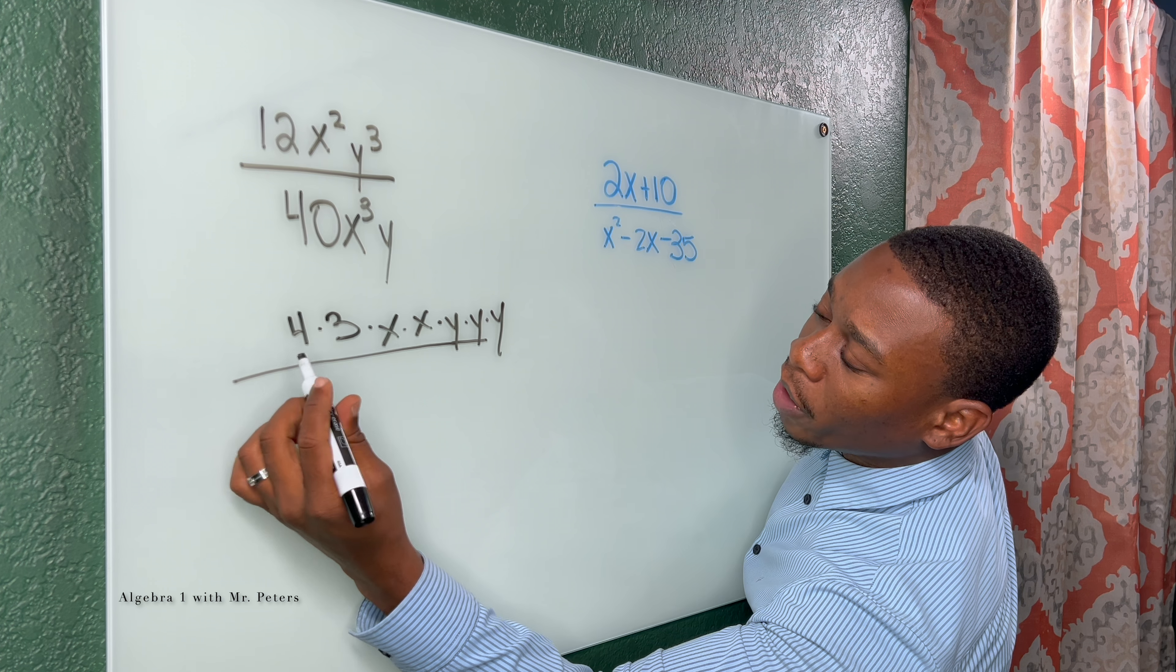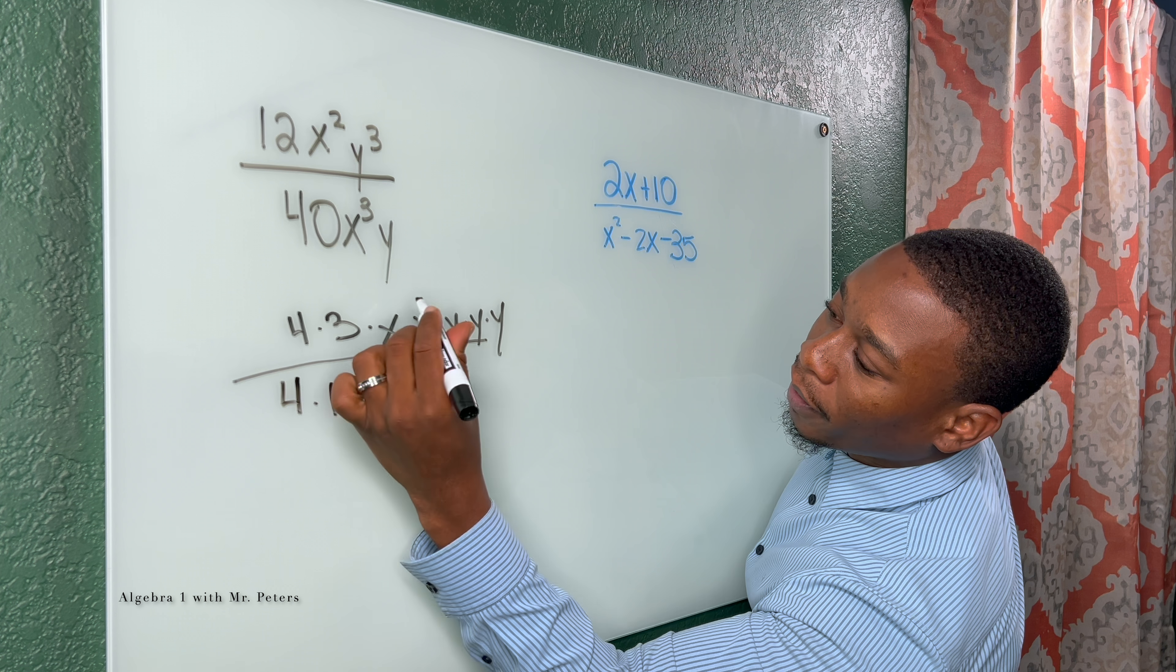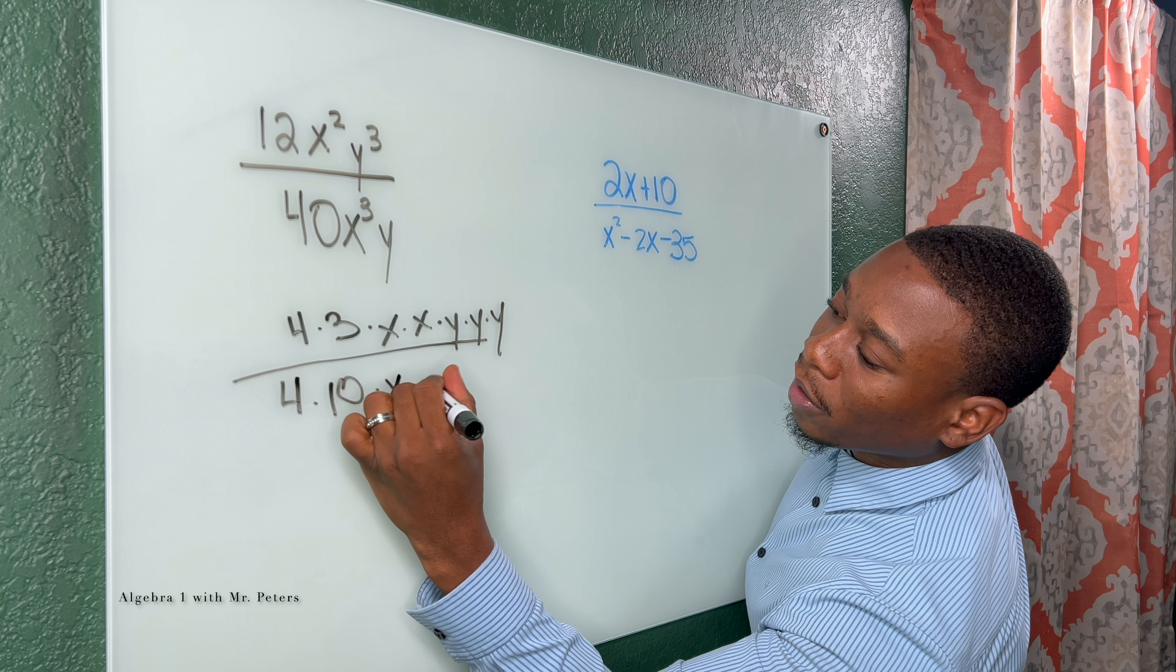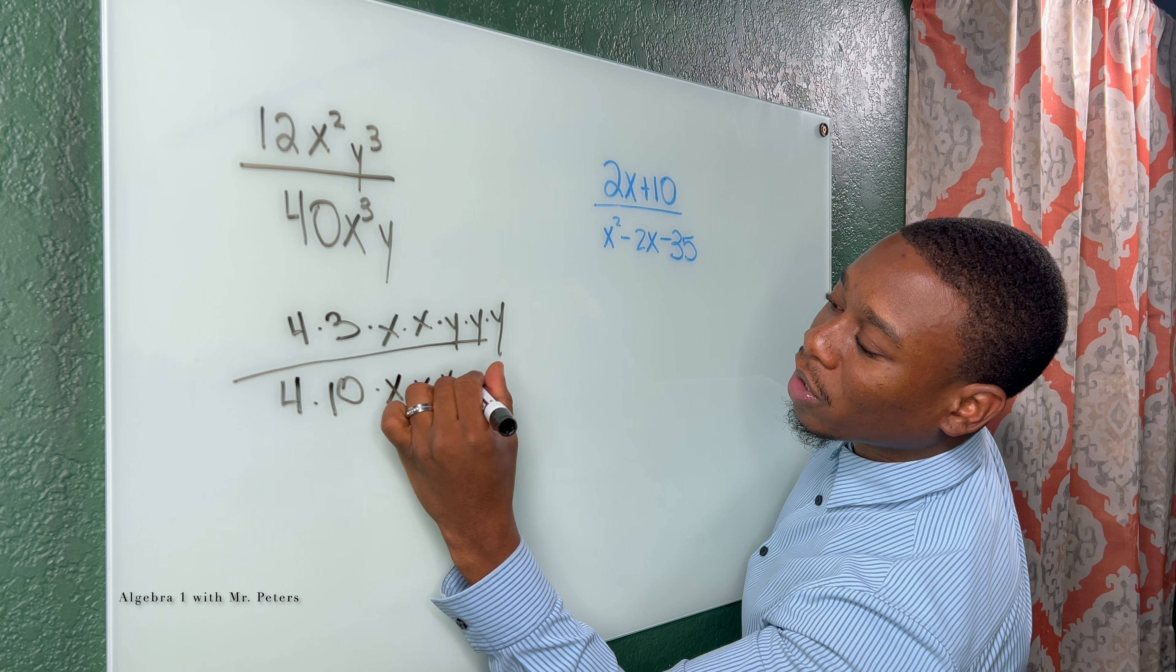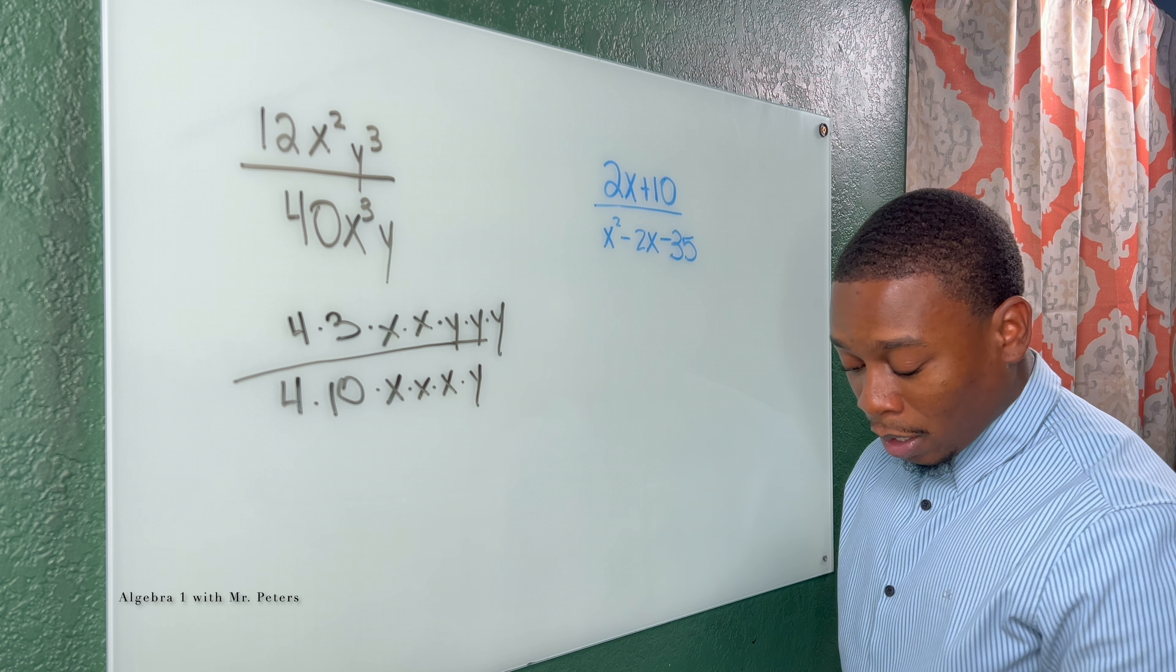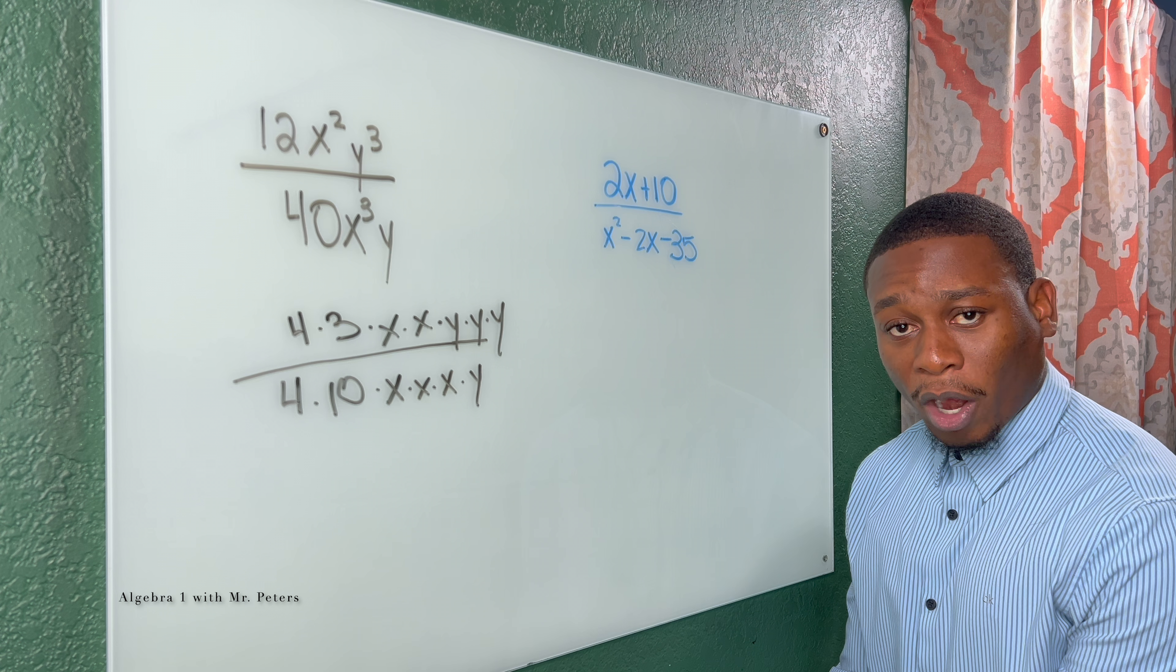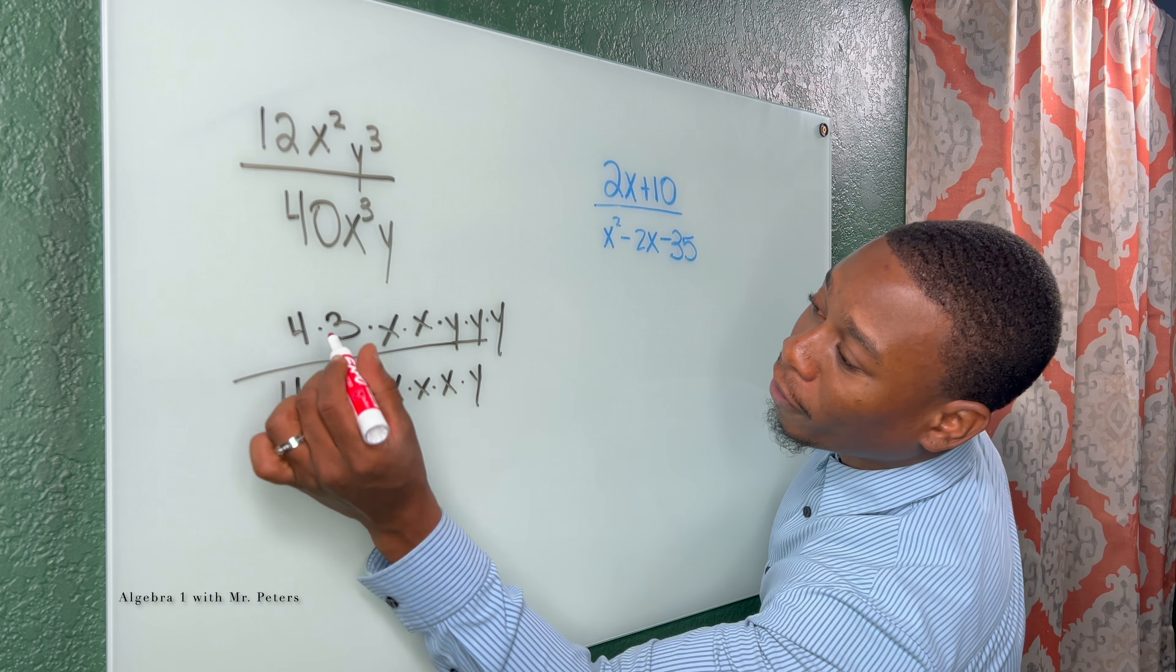Then when we go to the denominator, we could write this as 4 times 10. And then we'll write x to the third as x times x times x. And then that single y will be by itself. Now with this step, this is when we're able to go in and now use fraction properties and cancel out common factors.